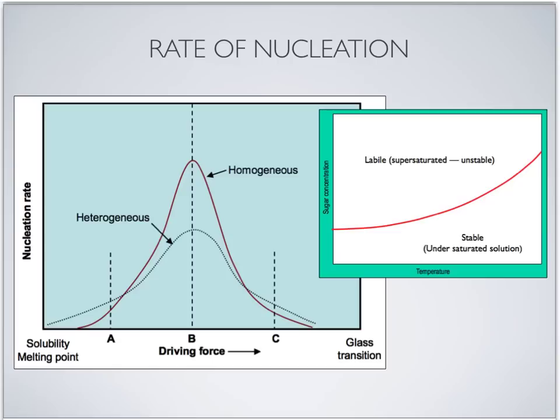On this slide we discuss the rate of nucleation. I have two diagrams: one is the nucleation rate curve as a function of driving force, and the other is the solubility curve. The rate of nucleation is defined as the number of nuclei formed per unit volume per unit time. In solution it depends on the supersaturation and also the temperature. For many food systems, the nucleation rate for a solution of constant concentration goes through a maximum as the temperature decreases, in the vicinity of point A in this diagram.